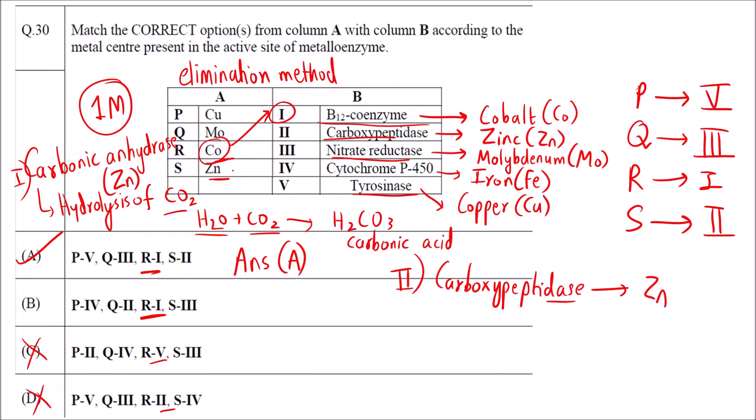If you knew that zinc is present in carboxypeptidase, that is only two of the elements, you could have solved the answer. Check S. S is 2. In which option S is 2? Only A. Here S is 3, so the option is incorrect. In this way you can use the method of elimination.